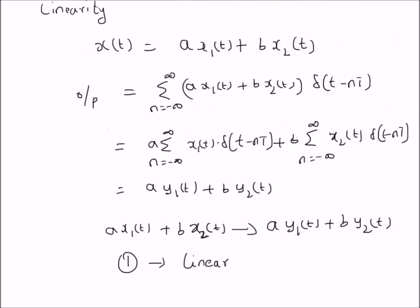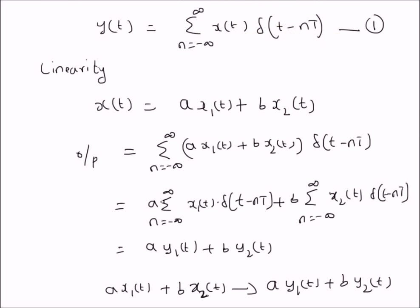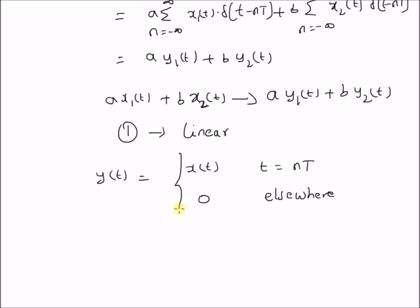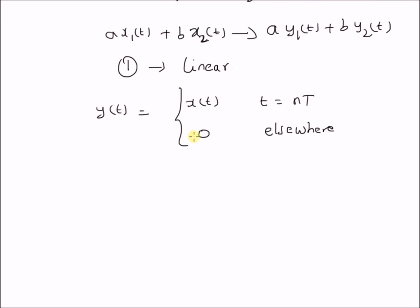By looking at equation 1, we can also see that y(t) can be rewritten as equal to x(t) only when t is equal to nT, and 0 elsewhere. In other words, the system is basically a sampler — the output y(t) equals the input x(t) only at times equal to an integer multiple of the sampling period T.